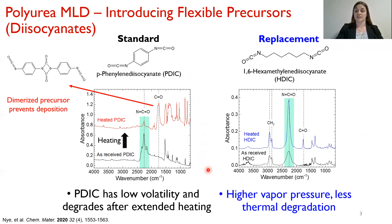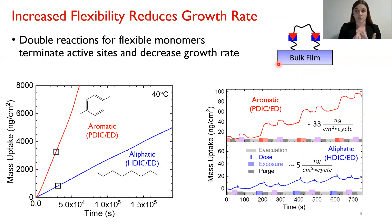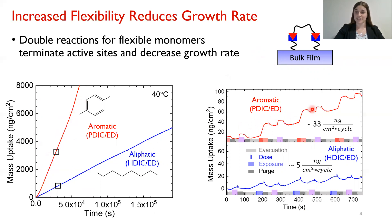Our next step is to see whether this indeed grows a film. For this flexible monomer, we are expecting many double reactions to take place. This occurs when both functional groups of our bifunctional molecule react with the surface in the same half cycle, thus terminating two active sites without generating a new site for continued growth. For this reason, we are expecting a lower growth rate with our flexible aliphatic film. And that is exactly what we see. From this QCM plot of mass uptake versus time, we have a much higher growth rate for our aromatic film, even visible cycle by cycle, compared to the mass uptake for our aliphatic film.